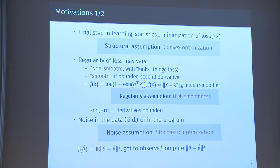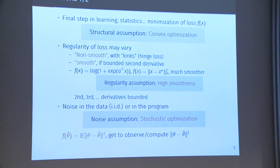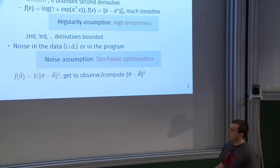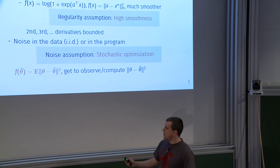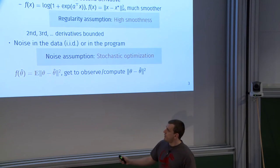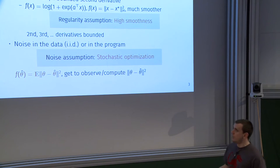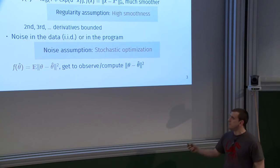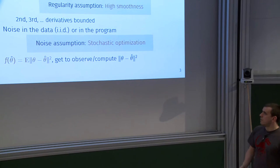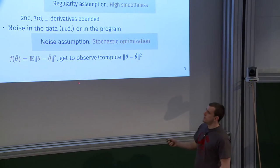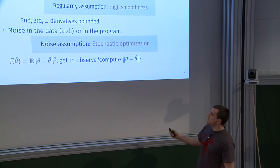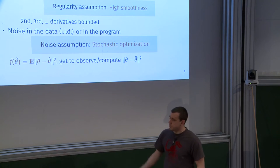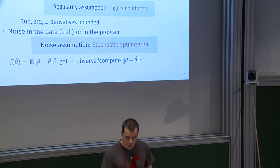We're going to look at stochastic optimization, meaning that when you make queries, you get noisy feedback. For instance, assume your mapping f is the Euclidean distance between your estimator theta and the true parameter theta. You don't have access to the true value of f — you only get a random, noisy feedback. So you just observe the norm between theta-hat and theta, without seeing the expectation. That's where the stochasticity appears — we have noise.